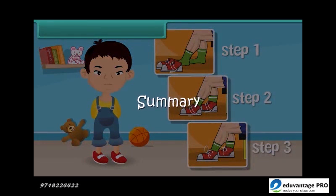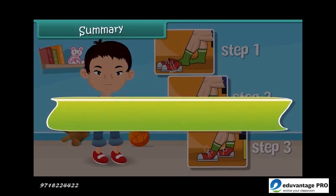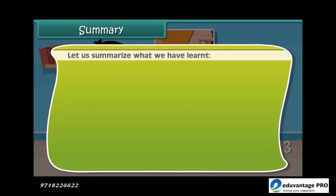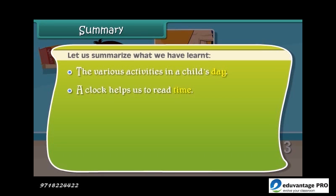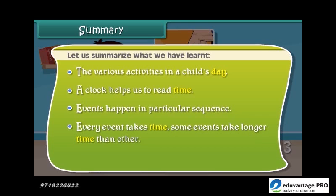Summary. Let us summarize what we have learned: the various activities in a child's day; a clock helps us to read time; events happen in a particular sequence; every event takes time and some events take longer time than others.